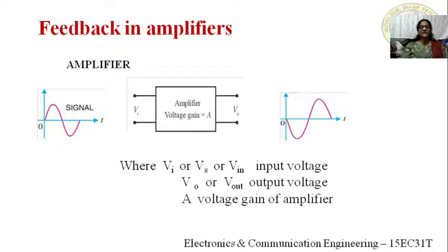In the amplifier circuit, the input signal is denoted as Vi, Vs, or Vin — different books use different notations. Similarly for the output, V0 or Vout notations can be used. A is the voltage gain of the amplifier. The amplifier is used to increase the strength of the input signal without changing the shape of the signal.